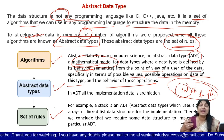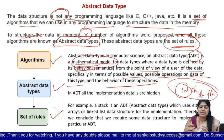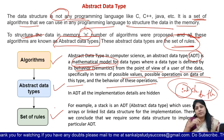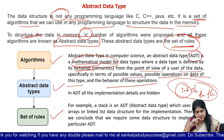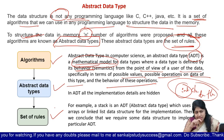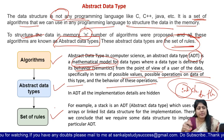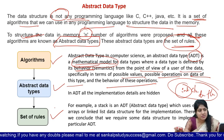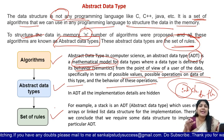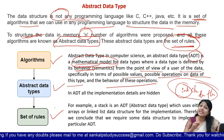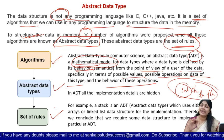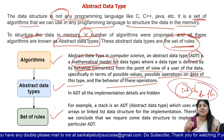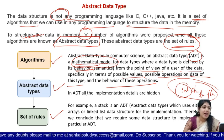I will explain stack ADT, queue ADT, and list ADT. So there are different possible values and different possible operations, and that depends on the data structure that we choose. Clear up to here.